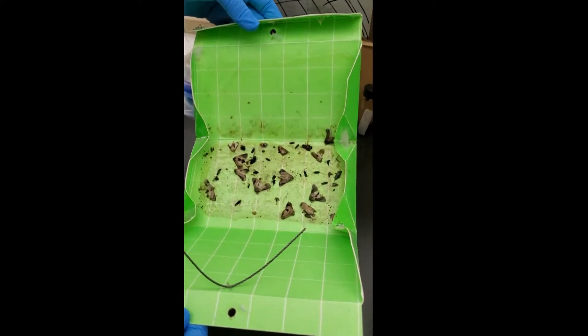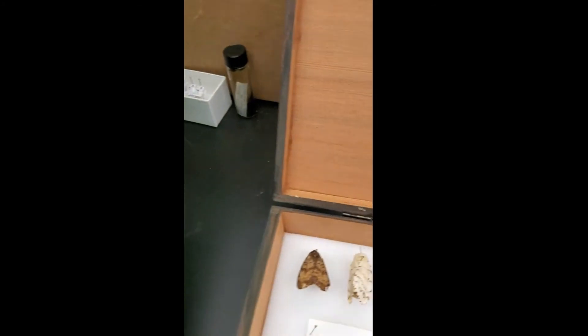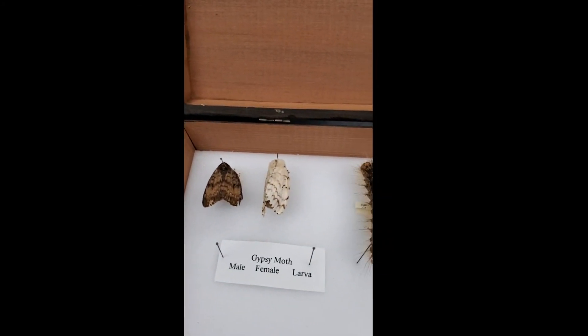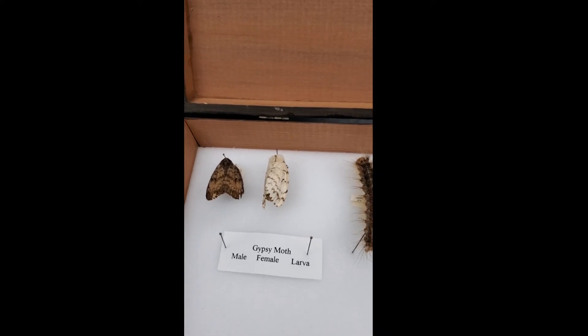It has a sticky substance in it and it often catches a lot of moths, but the gypsy moth is a fairly large moth. And it has large feathery antennae and defoliates trees.